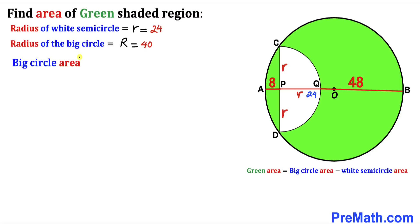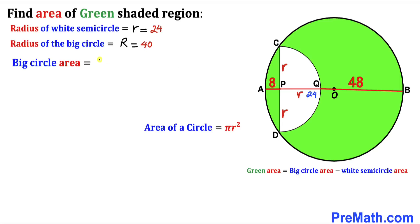Let's calculate the area of the big circle. Recalling the formula: area equals pi r squared. Our radius is 40, so the area of the big circle is pi times 40 squared, which simplifies to 1600 pi.